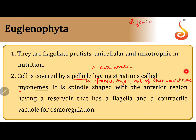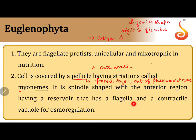Why is the pellicle so important and unique in Euglenoids? It is because the pellicle gives a definite shape — that's why whenever we see Euglena we see a spindle shape. The pellicle is both rigid and flexible. This is a very unique character: it is rigid enough to give a definite shape, and flexible enough to allow movement. The pellicle in Euglena gives an extra kind of locomotion.